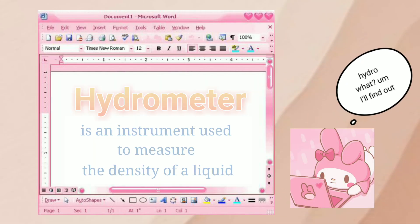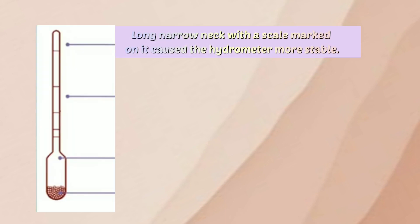An instrument used to measure the density of a liquid. Long narrow neck with a scale marked on it causes the hydrometer more stable. It's made of glass so it is not eroded by corrosive liquids.